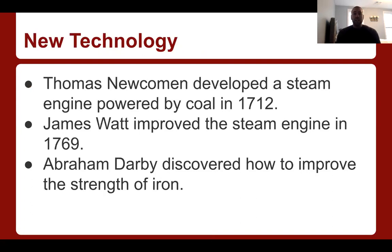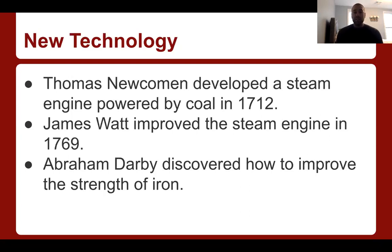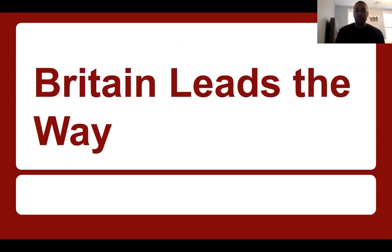Some of the new technology: Thomas Newcomen developed a steam engine powered by coal in 1712 — about a hundred years before where we are right now in the early 1800s. James Watt improved on the steam engine in 1769, and a gentleman named Abraham Darby discovered how to improve the strength of iron. So better things are going to be able to be built. If you have stronger iron and James Watt improving upon the steam engine, goods are going to be able to be moved faster.